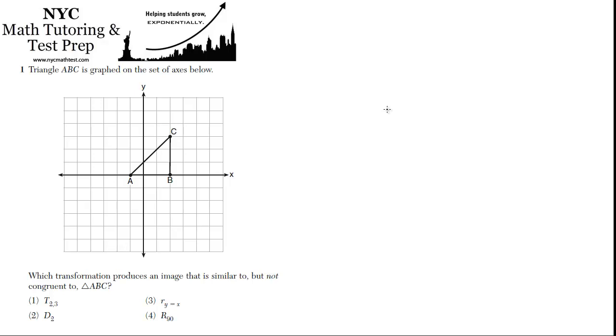So in this problem, they're asking us about transformations. Now let's remember, with transformations, there are four different kinds. There's translations, which is what this T here is for. And translation is basically when things just move, so they can move up and down or left to right. Then there's dilations, which is when they change size. And then there's reflection. And then there's rotation.